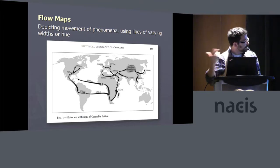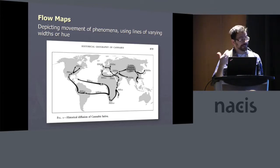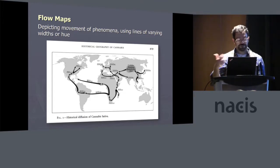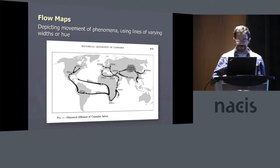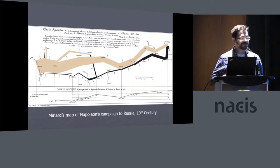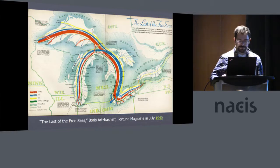Today we're looking at maps that have single arrows going from one place to another, reflecting some sort of magnitude — an amount of people or something, or directions in which cannabis traveled around the world. Everybody's aware of Menard's famous map, which seems to be the Holy Grail, and other such maps like it.